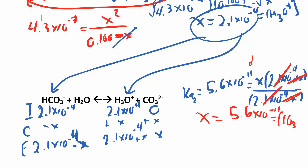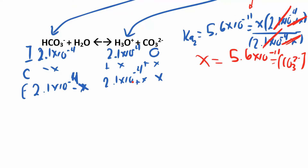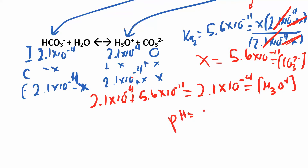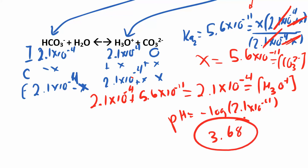To find the final pH, you add that new x to the hydronium from step 1: 2.1×10⁻⁴ plus 5.6×10⁻¹¹. That second term is so small it doesn't register, so you end up with 2.1×10⁻⁴ after rounding to the right number of sig figs. That's your final hydronium concentration — the same as what you got from the first step. Taking the negative log gives a pH of 3.68, which is acidic, which makes sense.